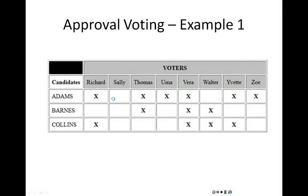The last type of voting method we're going to talk about here is called approval voting. This one, unlike the other methods we've talked about so far, does not use the preference ballot. So it's not like we're ranking everybody. All that we're saying is: would you be okay if Adams won? Yes or no. Would you be okay if Barnes won? Yes or no. Would you be okay if Collins won? Yes or no.